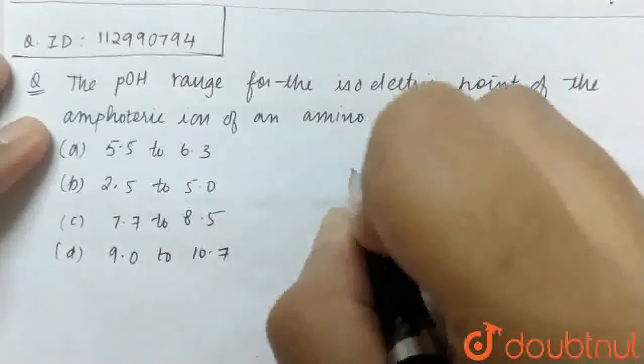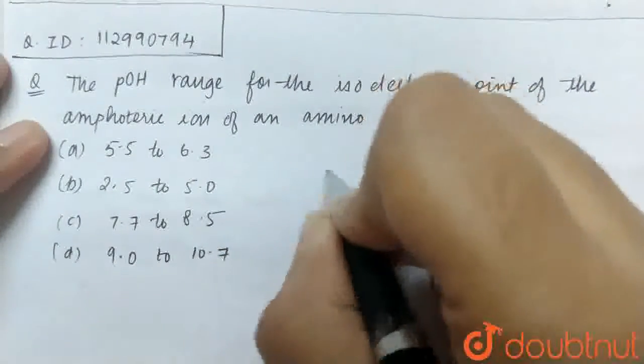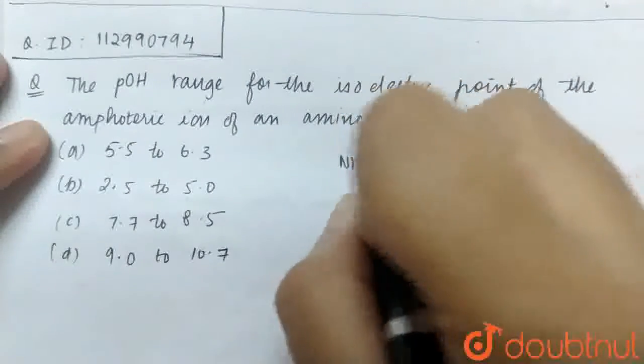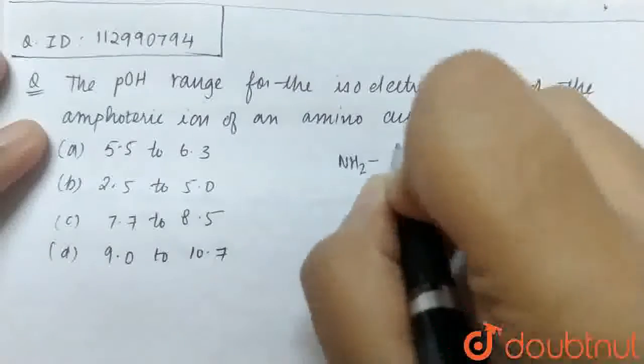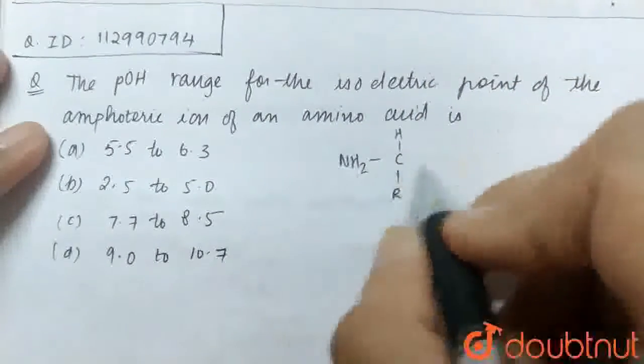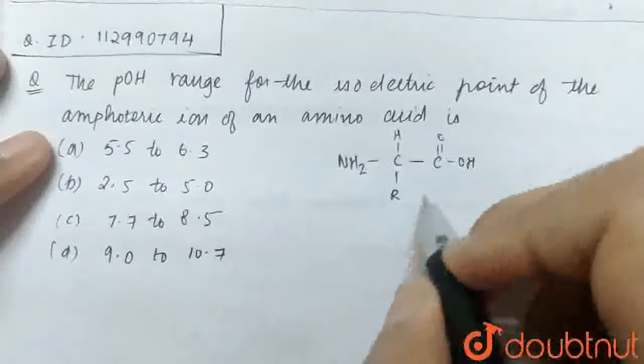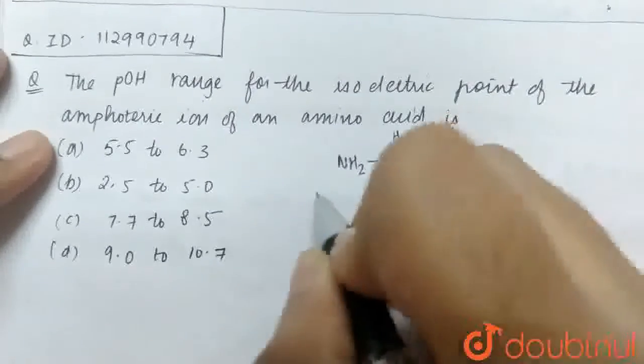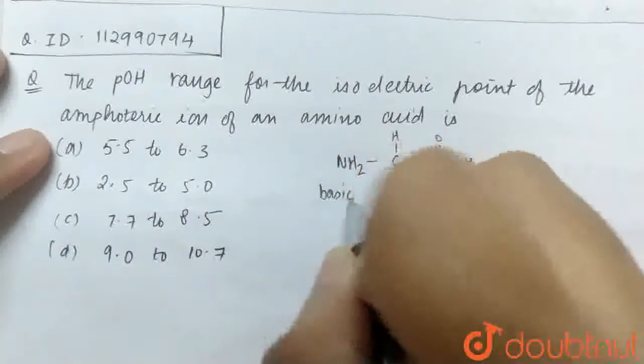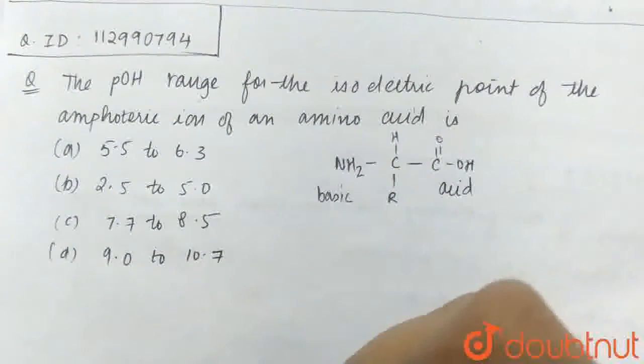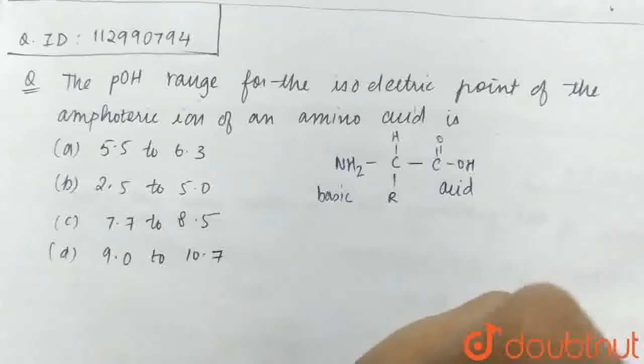Now, you know the amino acid structure - it has an amino group and an acid group. Generally, amino acid structure is like this: on one side, you can see the NH2 amino group and on the other side, you can see the COOH group. This side is the acidic group and this is the basic group. If you have acid and basic groups, the pH completely depends on these two groups.